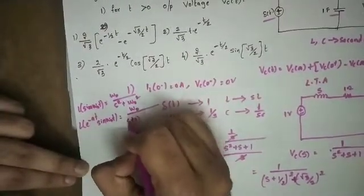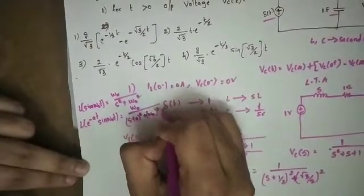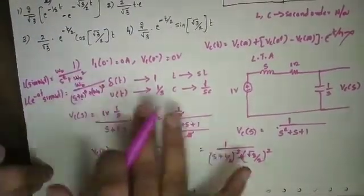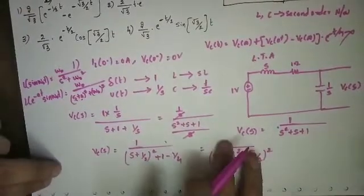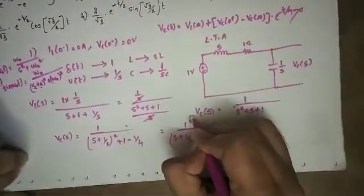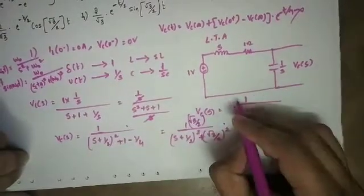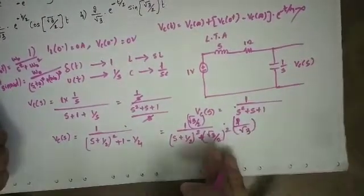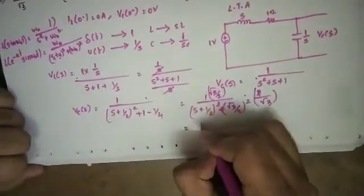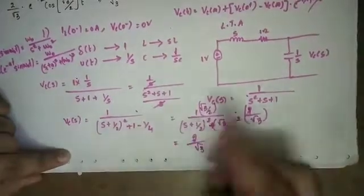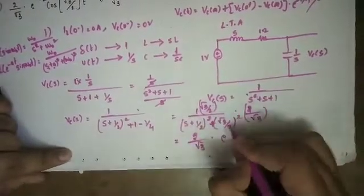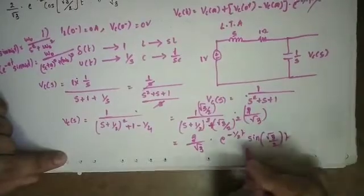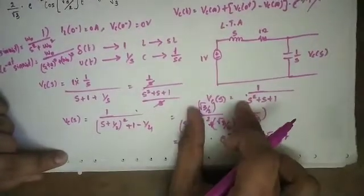Writing in the standard form (s + a)² + ω₀², we need to balance multiplication and division by (√3/2). So we multiply and divide by (2/√3) to get the standard sine transform pair. This gives (2/√3) · (√3/2) / [(s+1/2)² + (√3/2)²]. Taking the inverse Laplace transform: e^(-t/2) · sin(√3t/2). This is the time domain result.